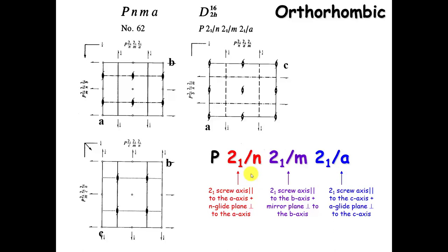Let's start with an orthorhombic example. Here is a very common space group. Its short name is PNMA, and its long name is P 2-sub-1 over N, 2-sub-1 over M, 2-sub-1 over A. One of the things we see in an orthorhombic space group is that whenever we have a two-fold rotation axis or 2-sub-1 screw and a mirror or glide plane perpendicular to it, in the short name, we only write the mirror or the glide plane — we don't write the rotation axis. So if we drop our screw axes, the long name becomes the short name: PNMA.